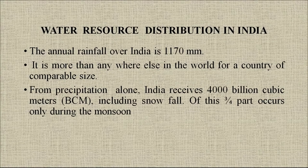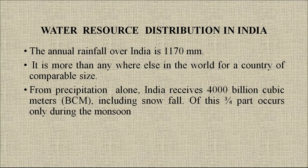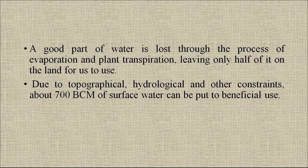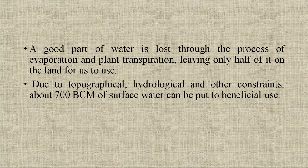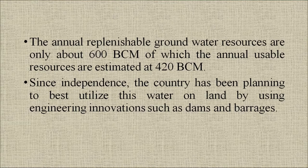Regarding water resource distribution of India, the annual rainfall over India is 1,170 mm — more than anywhere else in the world for a country of comparable size. From precipitation alone, India receives 4,000 billion cubic meters including snowfall. Of this, three-fourths occurs only during the monsoon. A good part of water is lost through evaporation and plant transpiration, leaving only half on the land for use. Due to topographical, hydrological and other constraints, about 700 BCM of surface water can be put to beneficial use. The annual replenishable groundwater resources are about 600 billion cubic meters, of which the annual usable resources are estimated at 420 BCM.